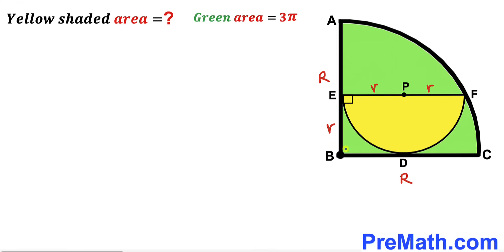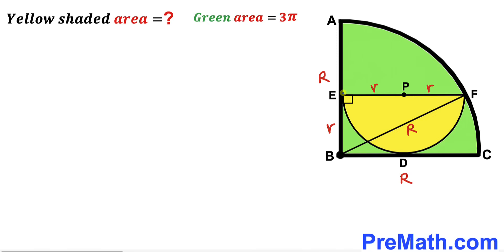In this next step I am going to connect center B with point F. We can observe that segment BF is the radius of the quarter circle, so I'm going to label it uppercase R. Now, the diameter EF equals r + r = 2r. Our task is now to establish the relationship between lowercase r and uppercase R.